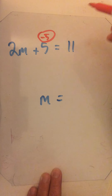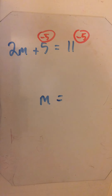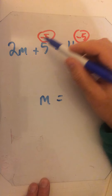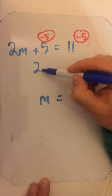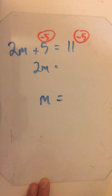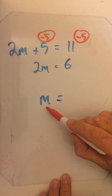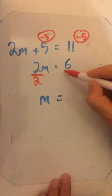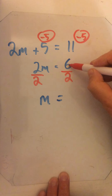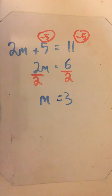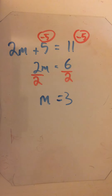The first thing I want to get rid of is this plus 5, so I'm going to minus 5, and because it's the balance method, I do the same on both sides. That leaves me with 2m, because 5 minus 5 is 0, and 11 minus 5 gives me 6. Now I've got 2m equals 6. This is 2 times m, so I'm going to divide by 2 — balance method, divide the other side by 2 as well. 2m divided by 2 leaves me with m, and 6 divided by 2 is 3. So m equals 3.